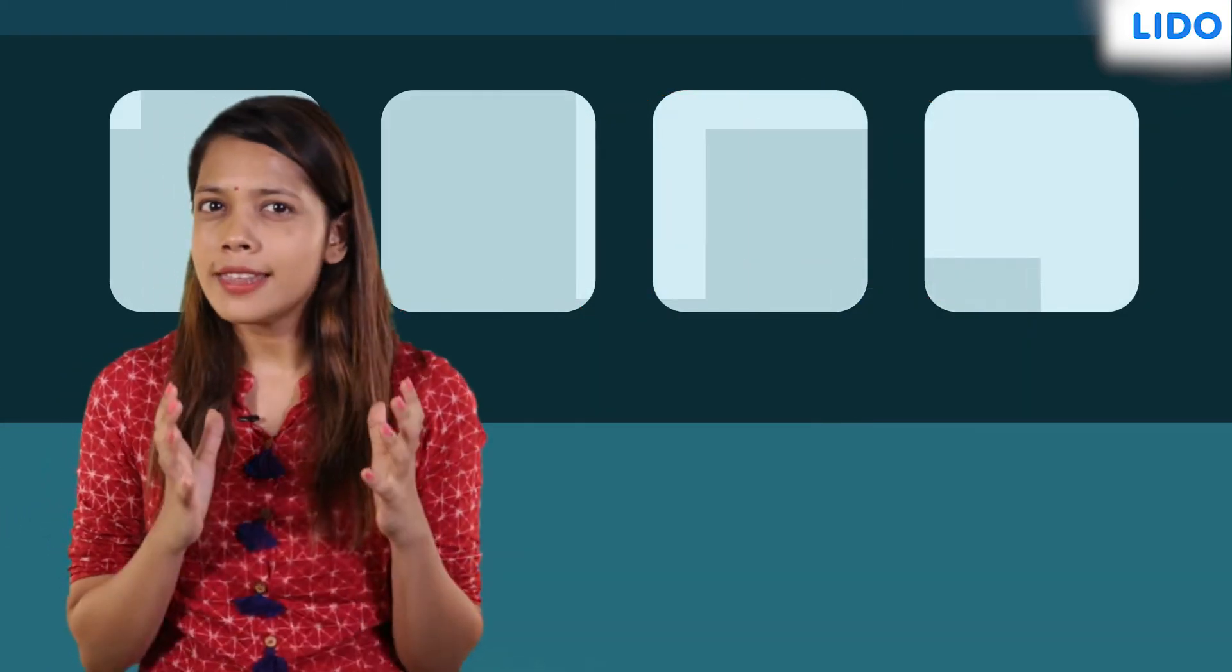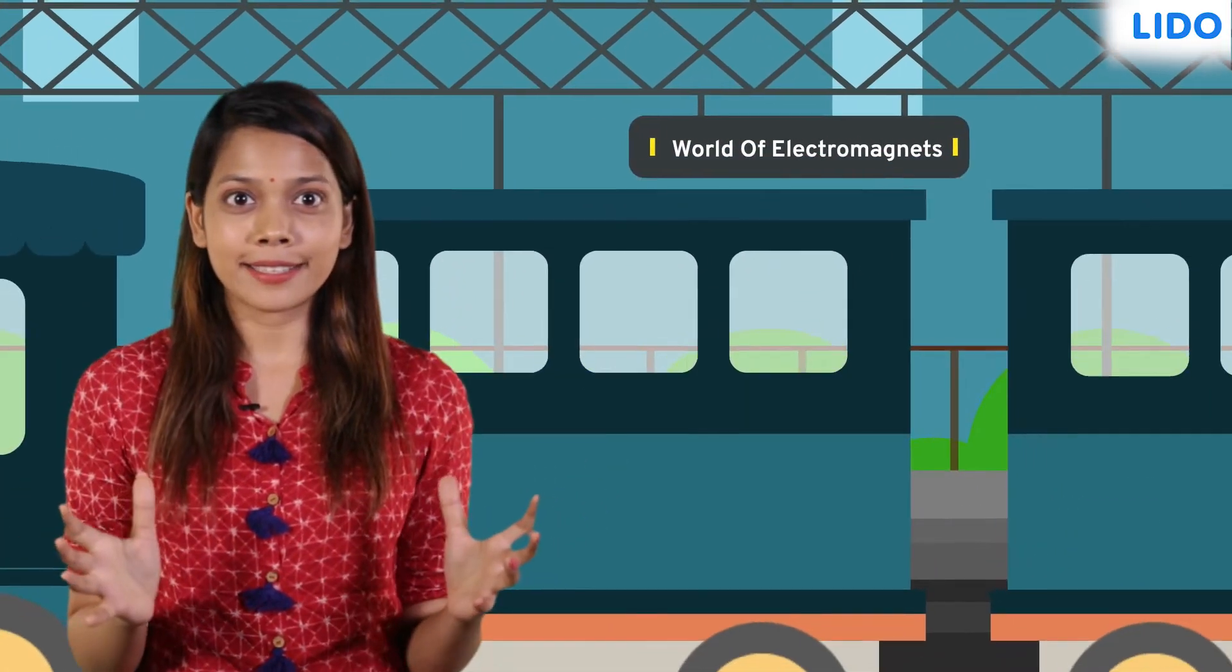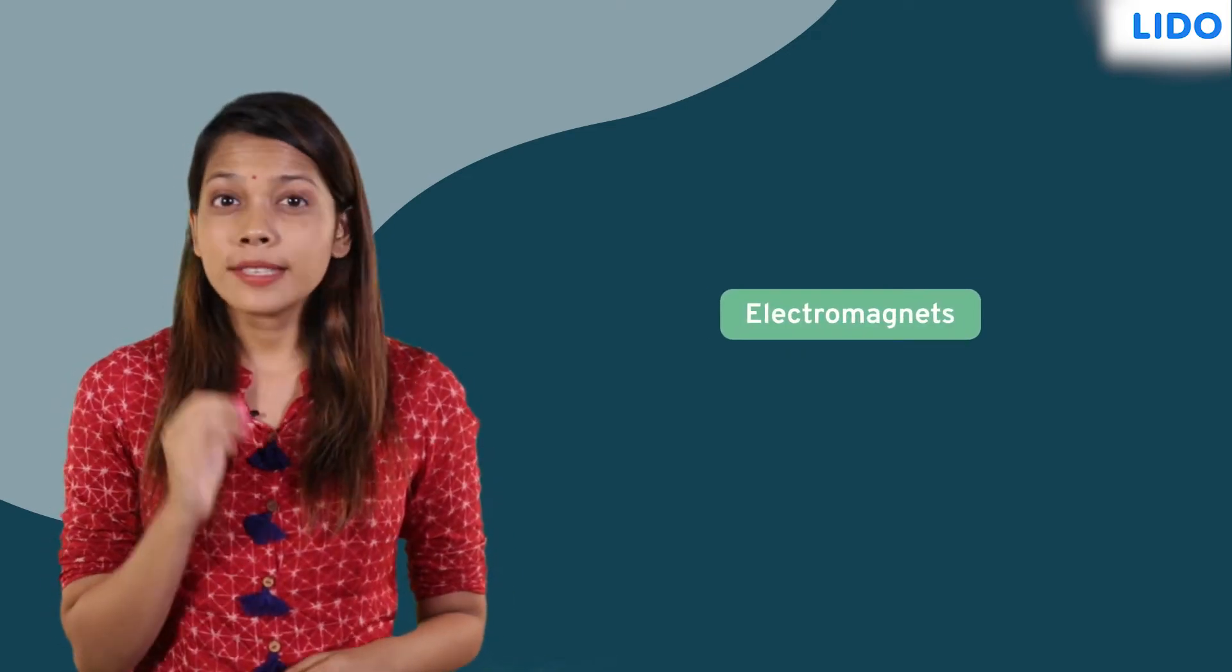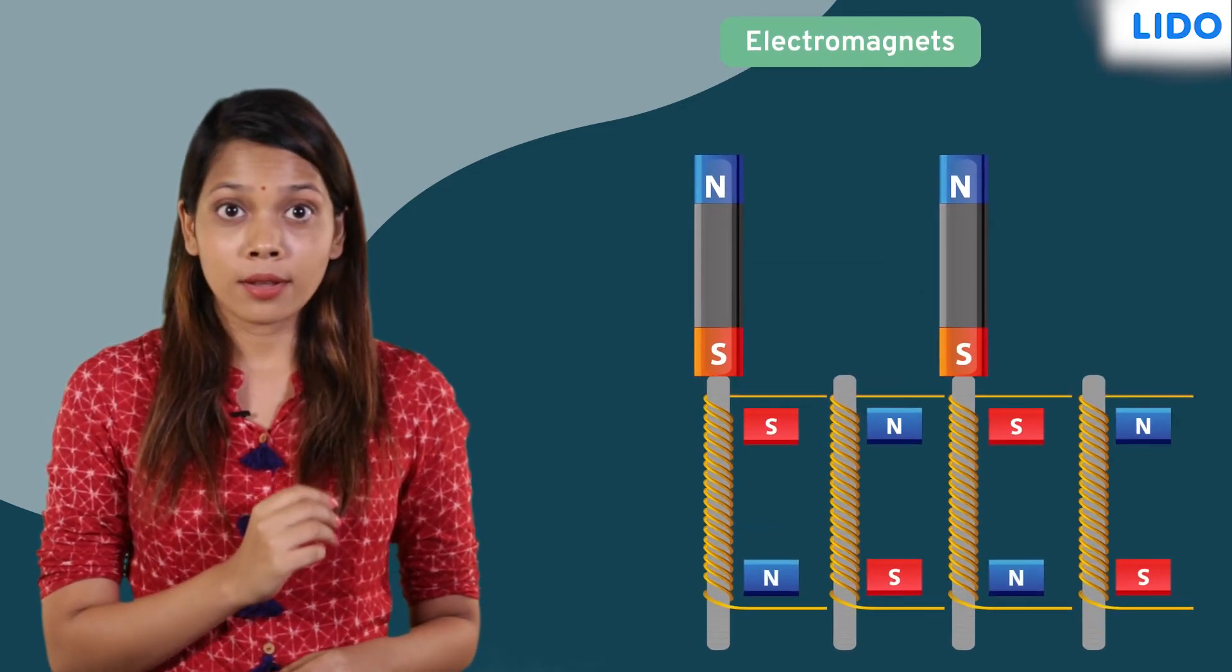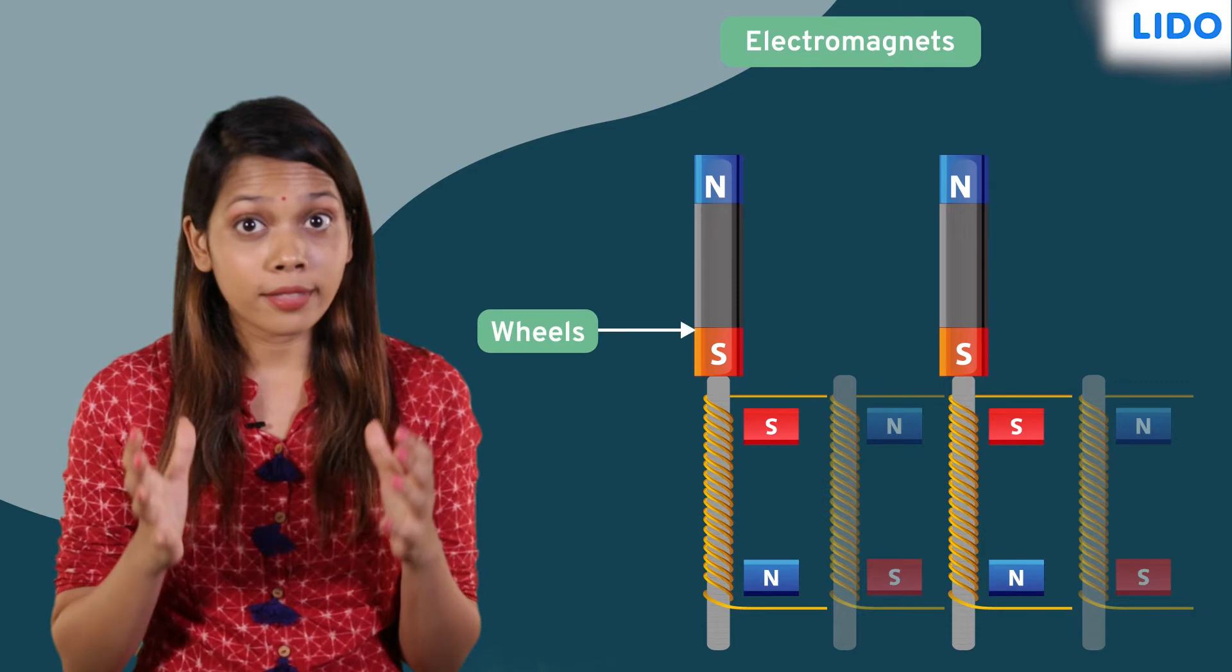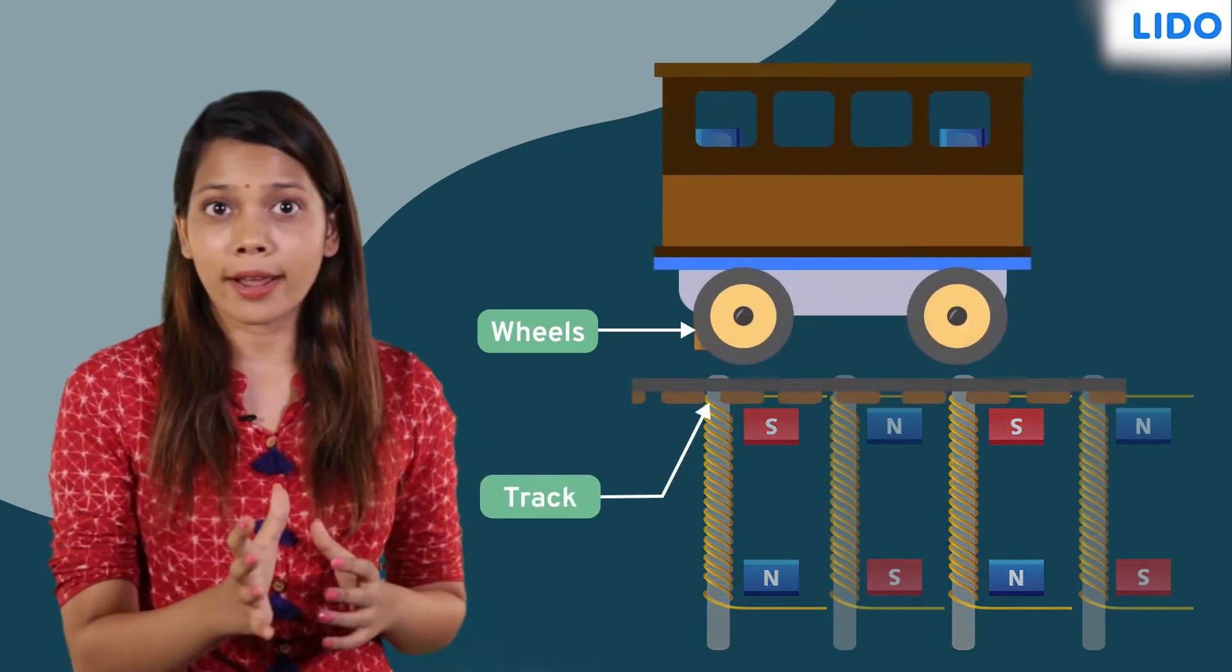We are now reaching our last stop of the train called World of Electromagnets. This very train we are travelling in works on the principles of electromagnets. This train uses two sets of electromagnets. One set causes repulsion between the wheels of the train and the track and pushes the train above the track.